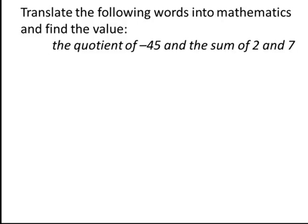Quotient indicates division. We write negative forty-five divided by the sum of two and seven.